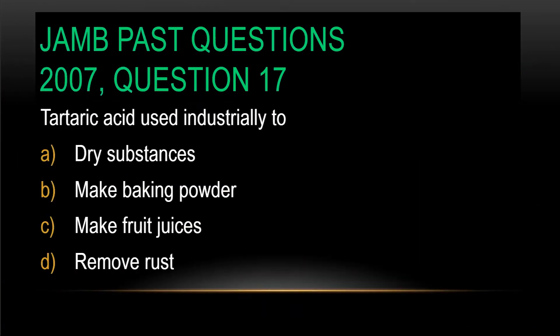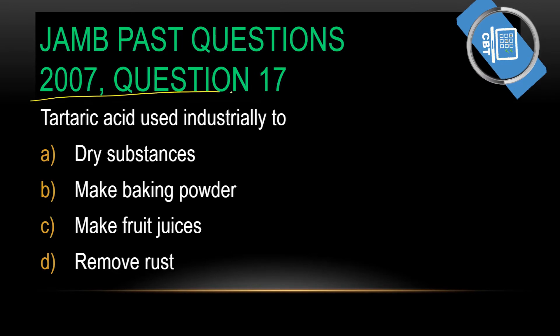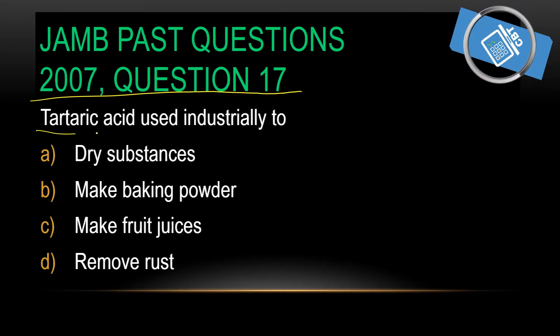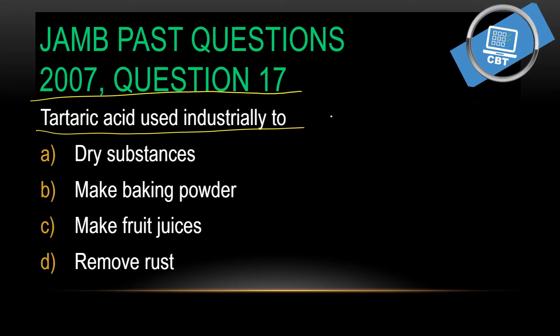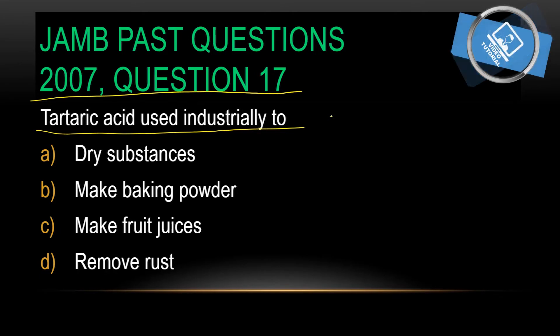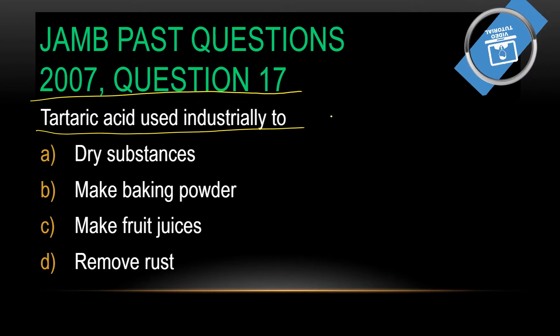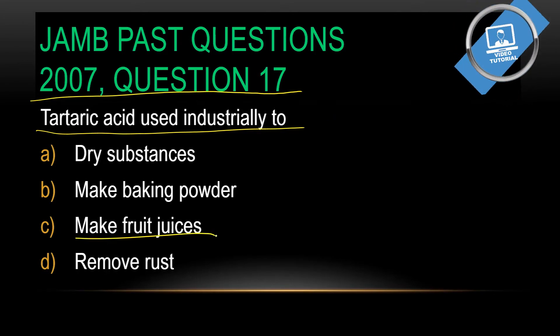Now let's solve a past question. 2007 question number 17: it says tartaric acid is used industrially to produce what? To make fruits, because tartaric acid is gotten from bananas or from grapes. So it's used to make fruit. Very, very simple.